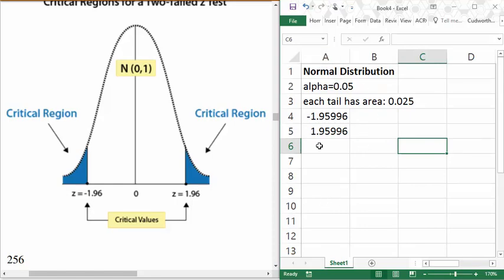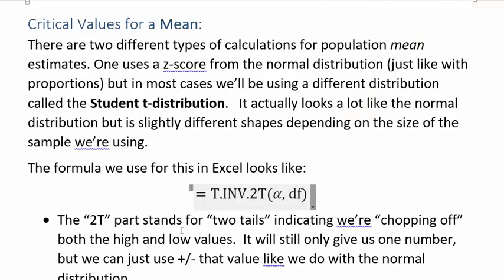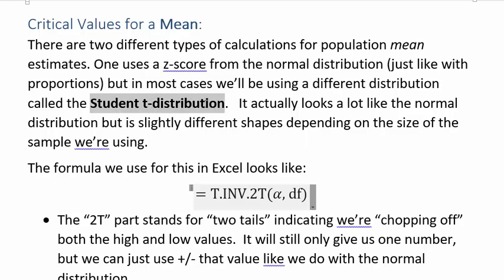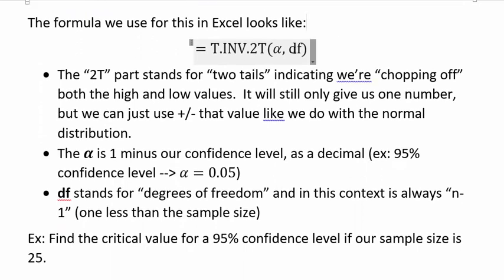Not all of our problems are going to use a normal distribution. Say we're doing an interval estimate for a mean. There are actually two different types of calculations for the mean. One uses the normal distribution — that's the sigma-known case — which is very uncommon. Usually we don't know the population standard deviation, so in those cases we use a different distribution called the student t distribution. It looks a lot like the normal distribution, but its shape varies slightly depending upon the sample.